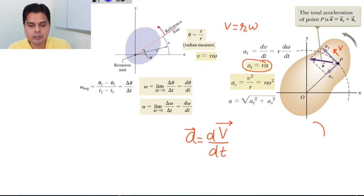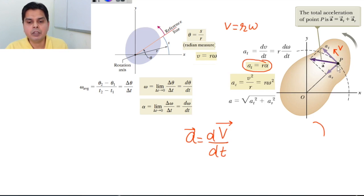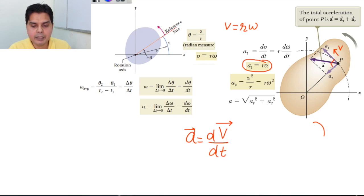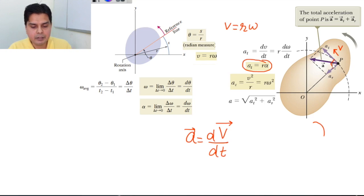We can also write the centripetal acceleration as aᵣ = rω². This arises because the direction of v is continuously changing. If both the magnitude and direction of v are changing, the total acceleration is a = √(aₜ² + aᵣ²). This uses the Pythagorean theorem because aₜ is tangential and aᵣ is radial — they are perpendicular to each other.